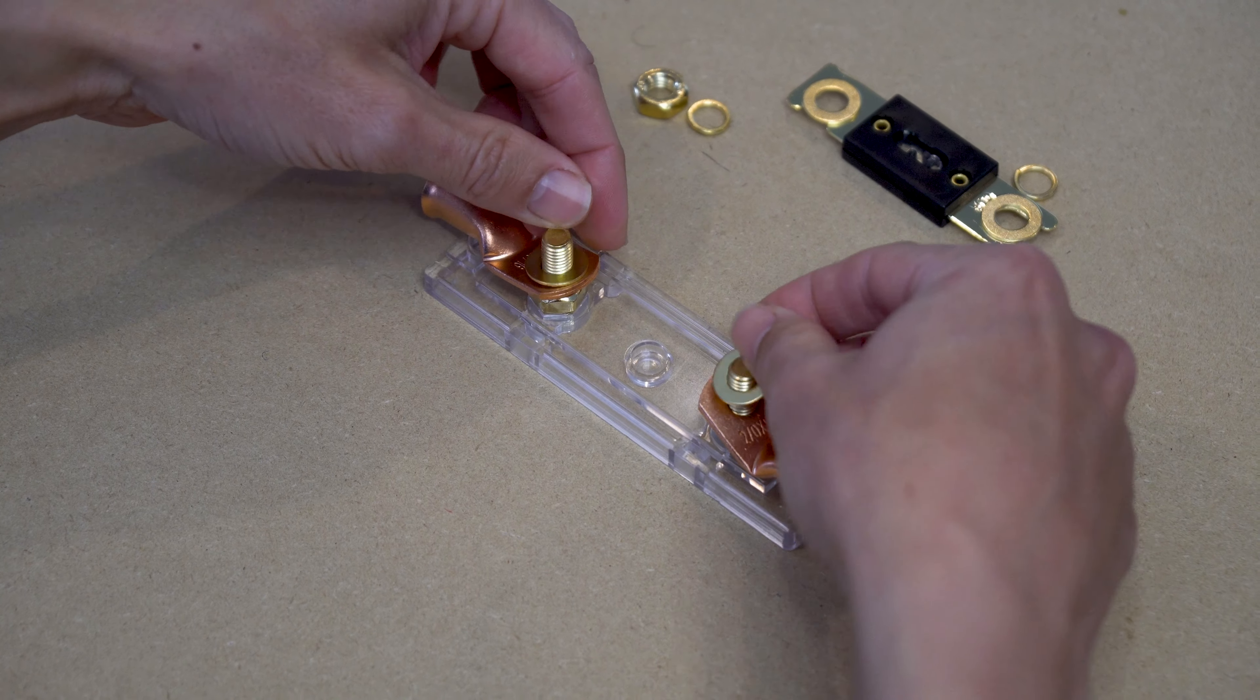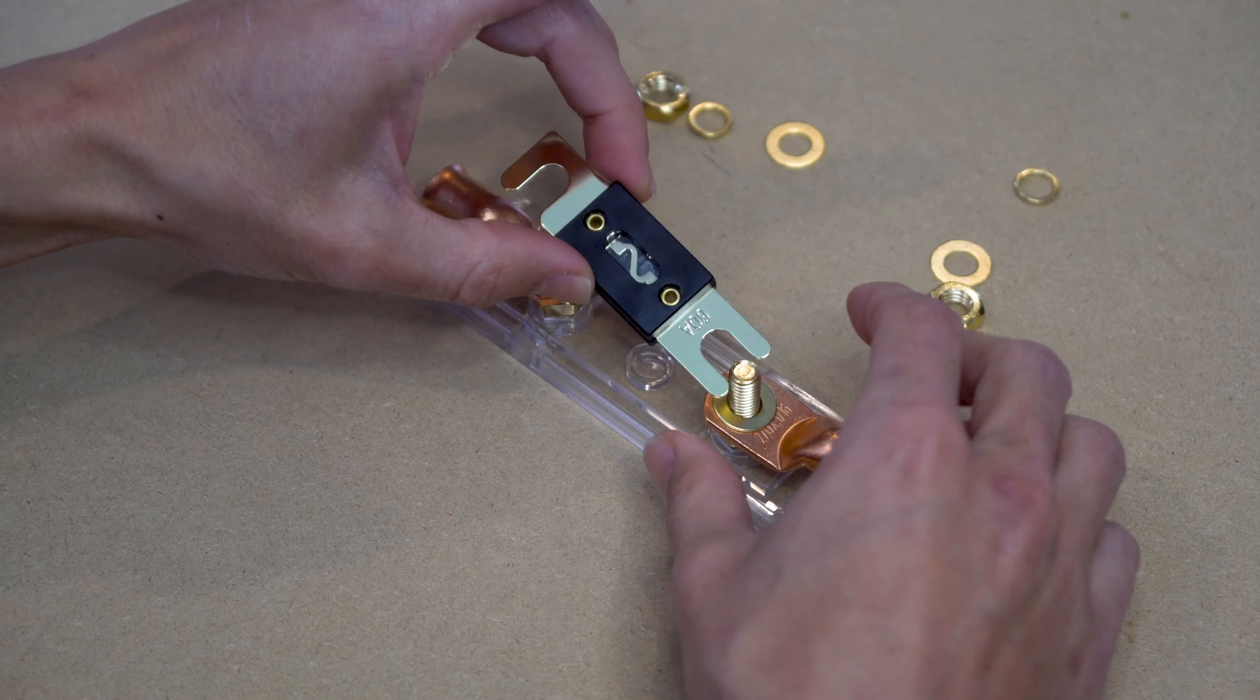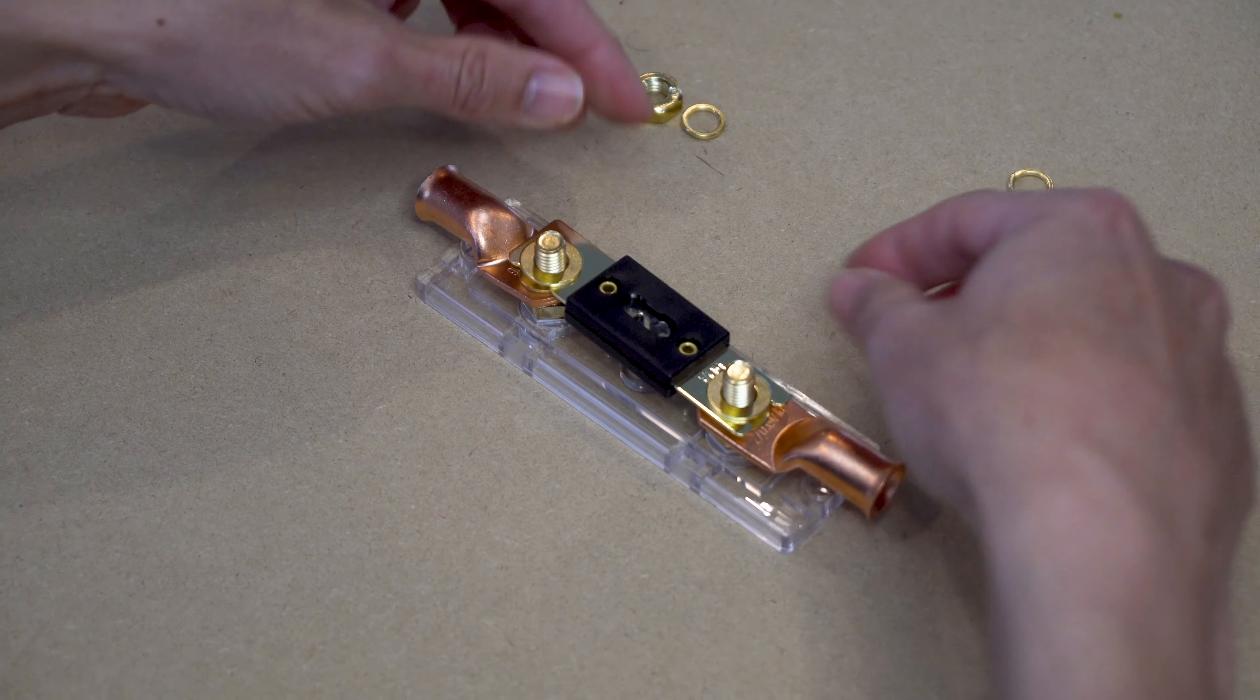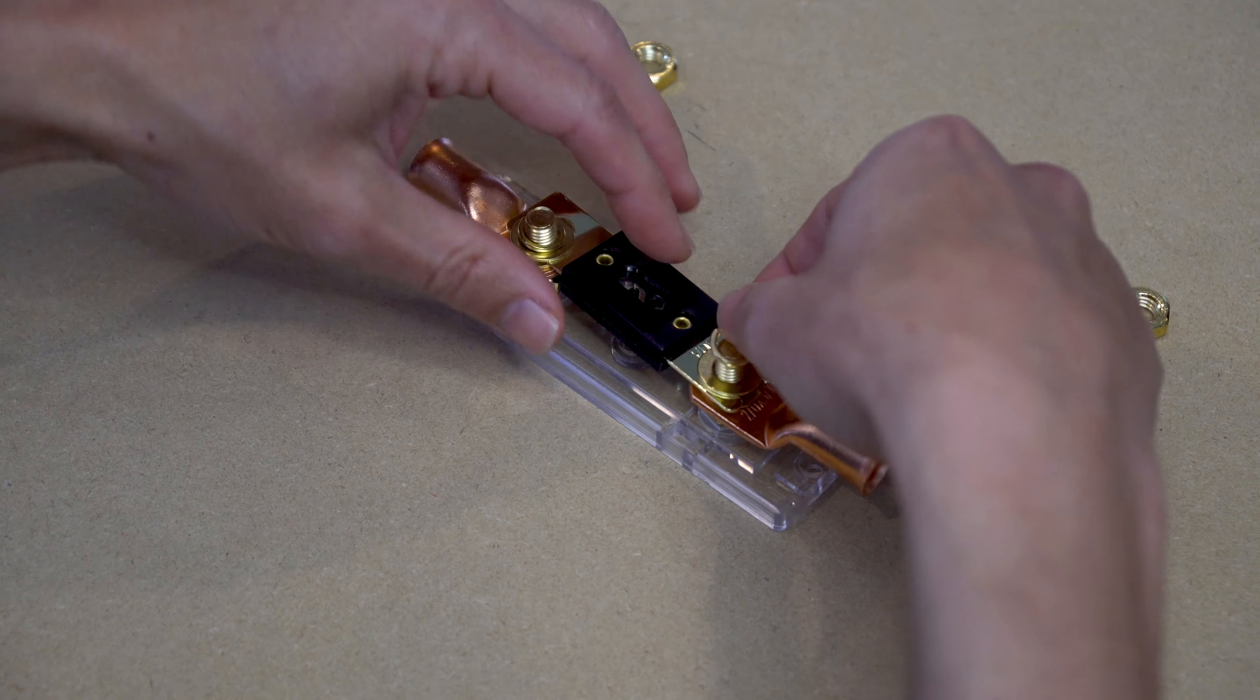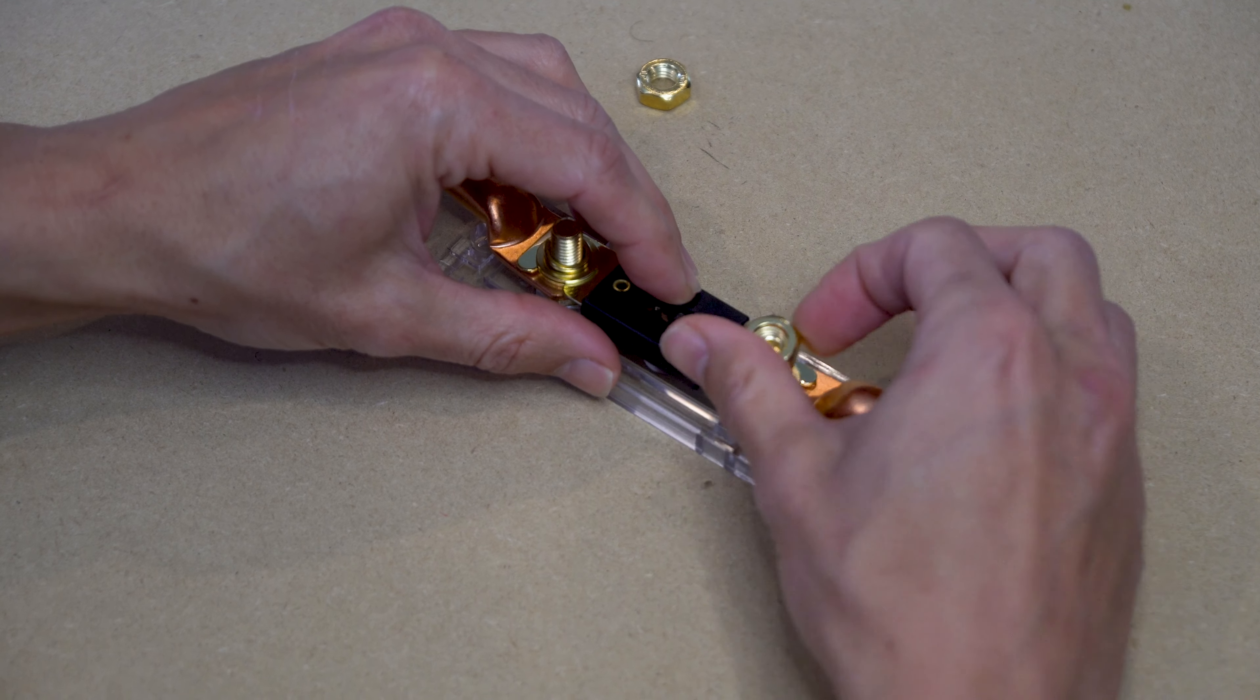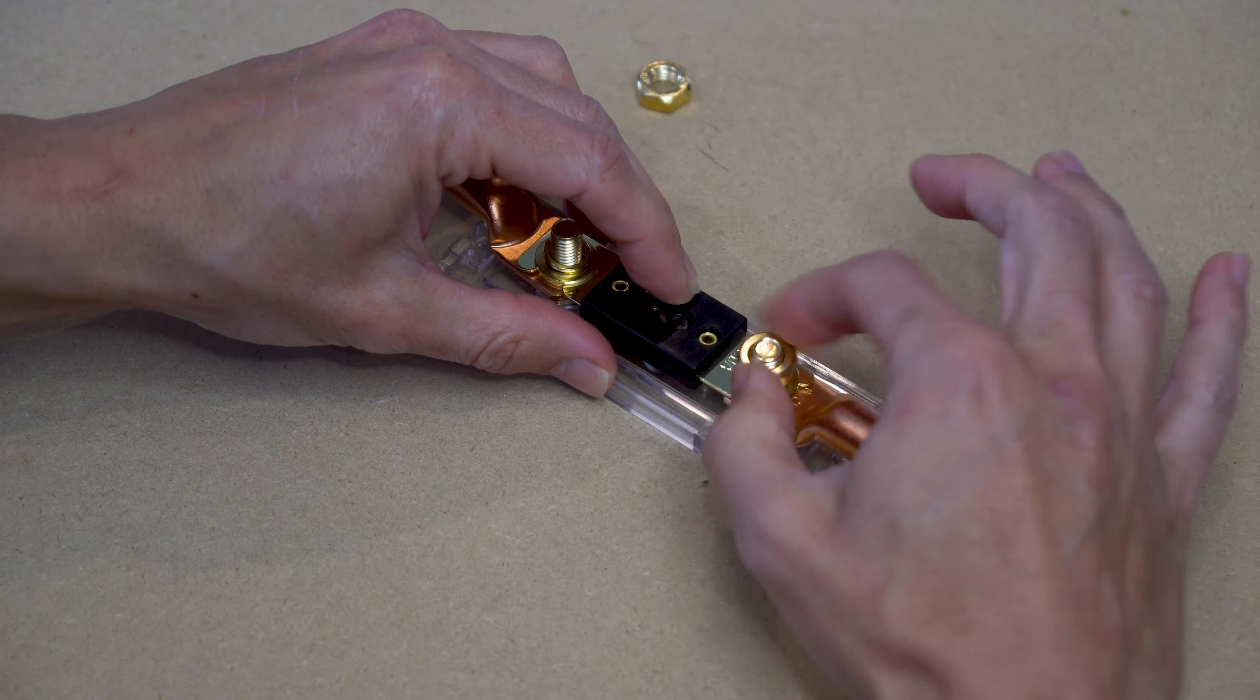Then place a set of flat washers. Then place your fuse on top. Put another set of flat washers. Then your lock washers. And finally fix everything together with your hex nuts.